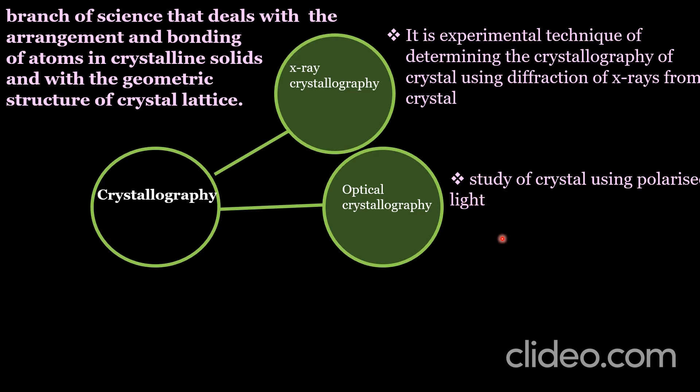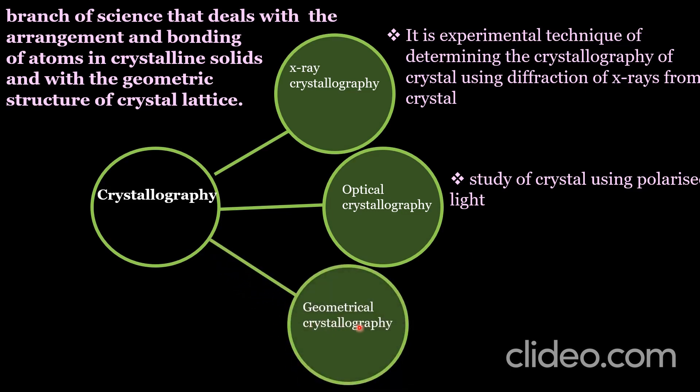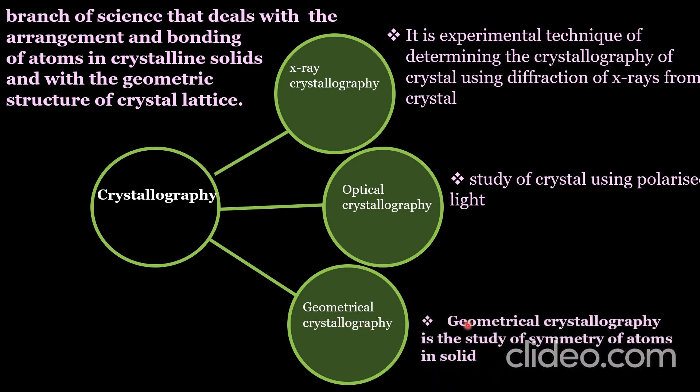Optical crystallography is the branch that deals with the optical properties of crystals. Then we have geometrical crystallography, which is the study of the symmetry of atoms within the solid. All crystalline materials have a specific arrangement of atoms and molecules, and they have a specific pattern — that is, they have specific symmetry.